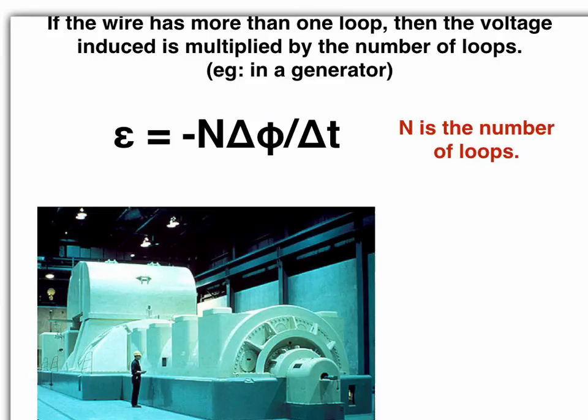Back to Faraday's law again. If the wire happens to have more than one loop, say in a coil or in a generator, then you just have to multiply the induced voltage by the number of loops. And so that's what the big N is in that relationship there. A good example is in that picture there, which is the generator probably in a power station. It'll have lots and lots of loops, and so therefore a really high voltage.